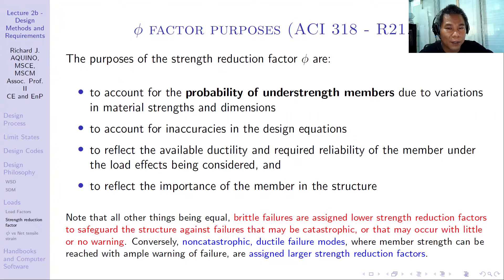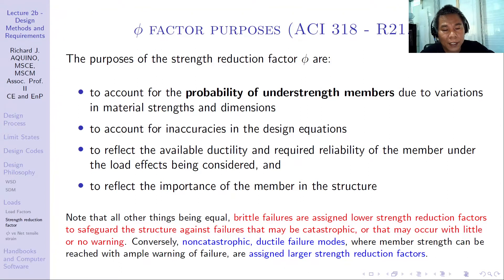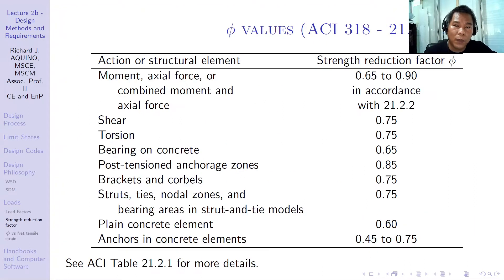Brittle failures are assigned lower strength reduction factors to safeguard the structure against failure that may be catastrophic or that may occur with little or no warning. Columns are more important than beams because a beam collapse is normally localized, but a column collapse will most likely cause global failure of the structure. Conversely, non-catastrophic ductile failure modes with ample warning are assigned larger strength reduction factors.